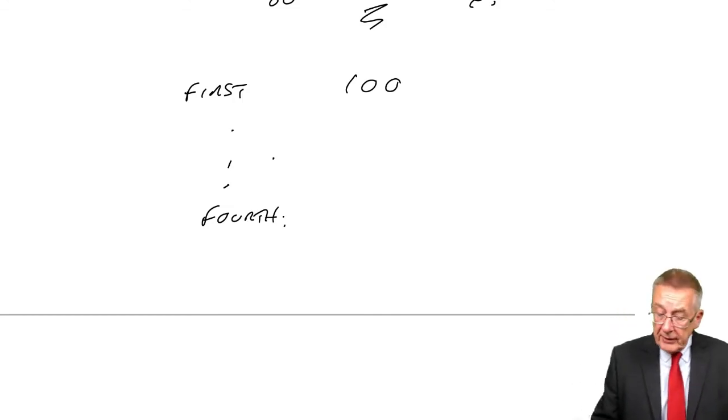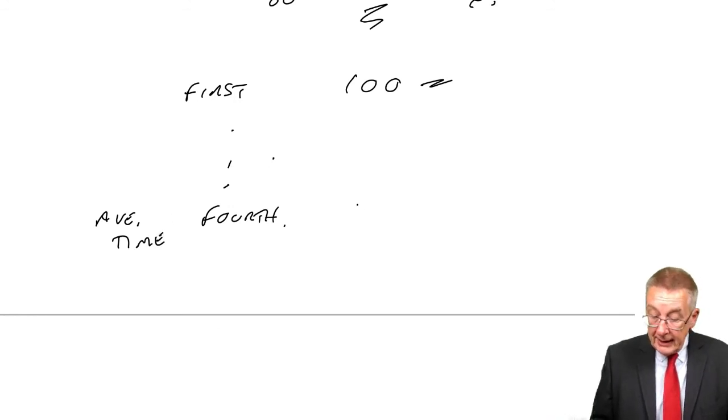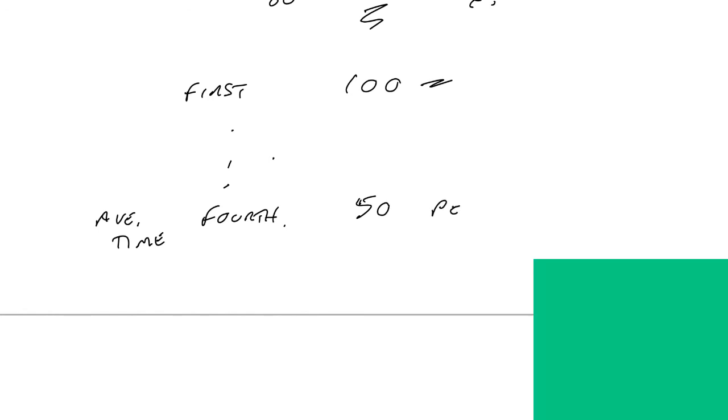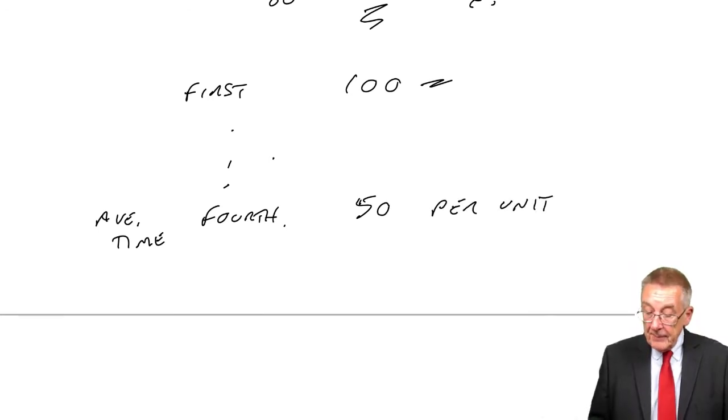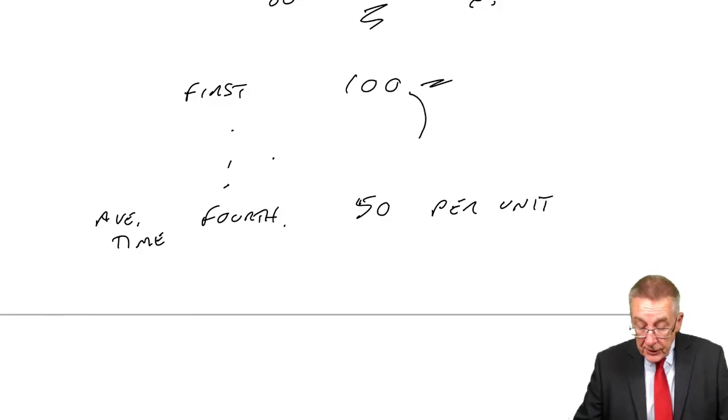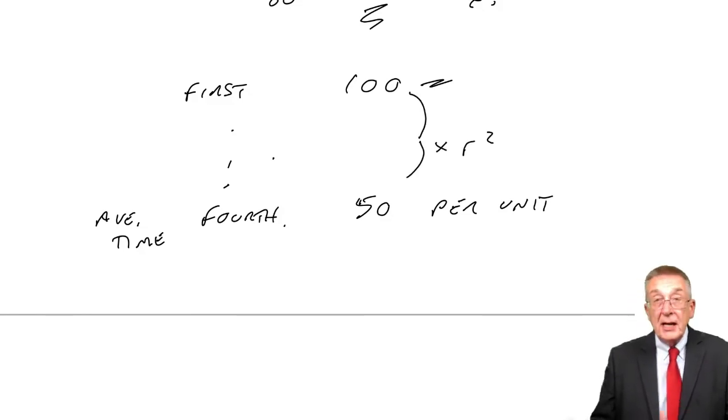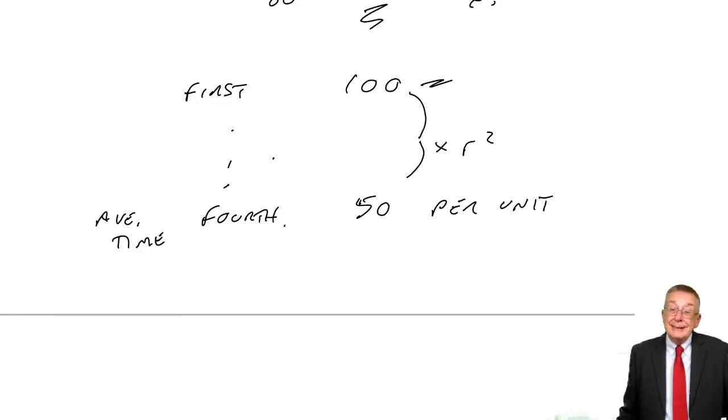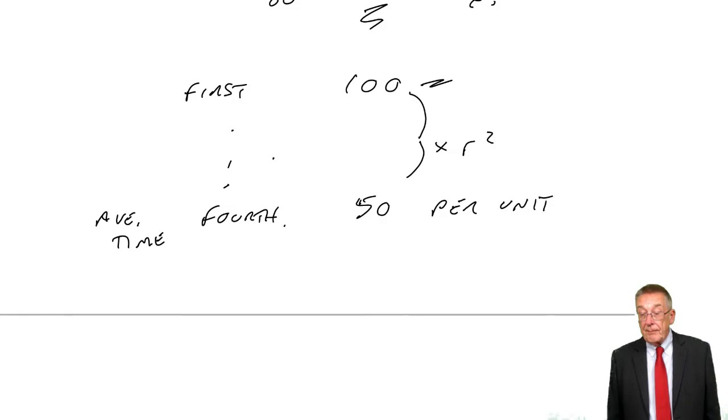So, you'd work out the average time for the first is 100. The average time if there were four is maybe 50 per unit. But because you're doubling twice - that would give us two, that would give us four - you'd be multiplying by r twice, r squared. So r squared would be 50 over 100. Then you'd take the square root. So think about that because I say it is quite popular.